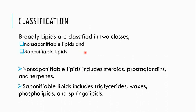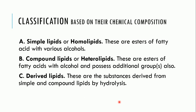Classification: Lipids are broadly classified into two classes — non-saponifiable lipids and saponifiable lipids. Non-saponifiable lipids include steroids, prostaglandins, and terpenes. Saponifiable lipids include triglycerides, waxes, phospholipids, and sphingolipids.